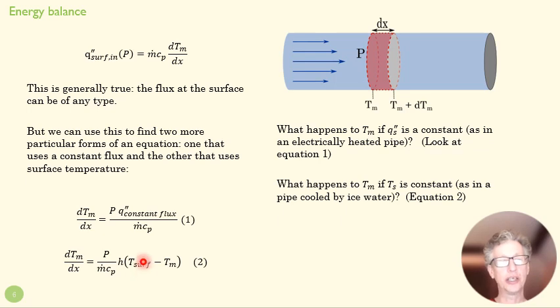So initially, at the entrance of our pipe, when we have the biggest difference between these two things, we're going to have a relatively large change in temperature in the x direction. As Tm gets closer and closer to T surface, the right-hand side here gets smaller, and the slope of our temperature change field gets smaller.